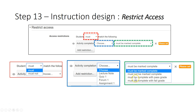The conditions can be must be marked as complete, must not be marked as complete, or be complete with a passing grade, and so on. That's the reason why for each item — each resource or activity — you need to set the condition for what is considered complete.